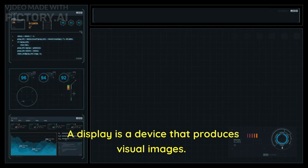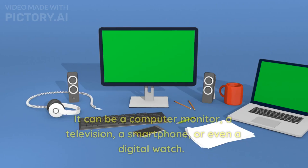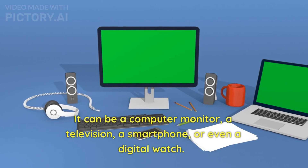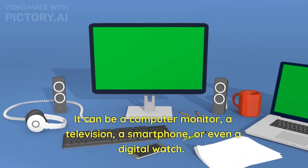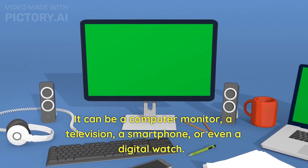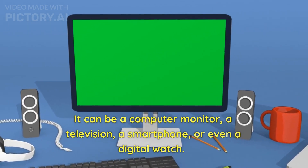A display is a device that produces visual images. It can be a computer monitor, a television, a smartphone, or even a digital watch.